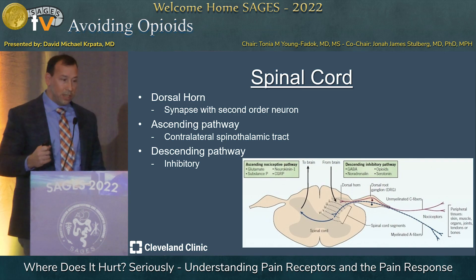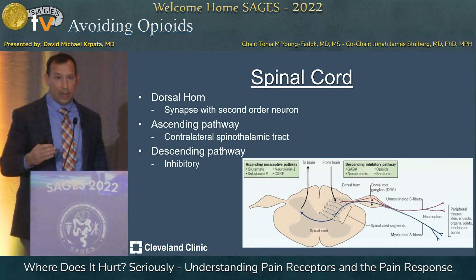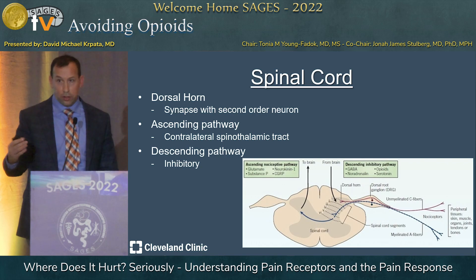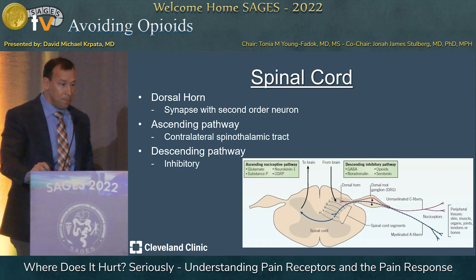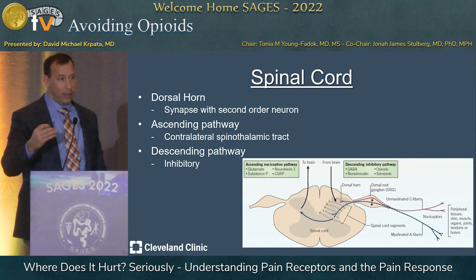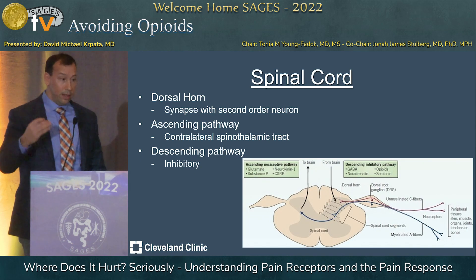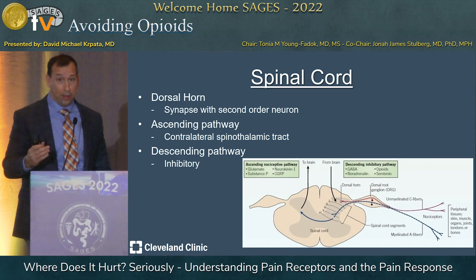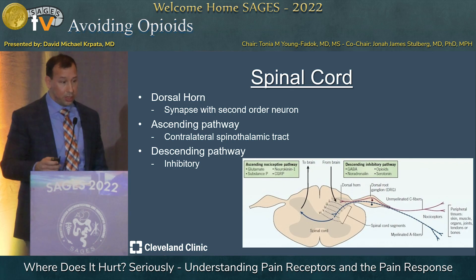As we travel through transmission to the spinal cord, you get your first synapse of the primary neuron to the secondary neuron within the dorsal horn. That signal enters through the dorsal root, where the cell bodies sit in the dorsal ganglion. The dorsal horn is really where the magic happens. There are two pathways: the ascending pathway, where after the synapse in the dorsal horn you get contralateral crossover and run up the spinothalamic tract to the brain; and there is a descending pathway that functions to modulate, also working within the dorsal horn — and this is where opioids come in.